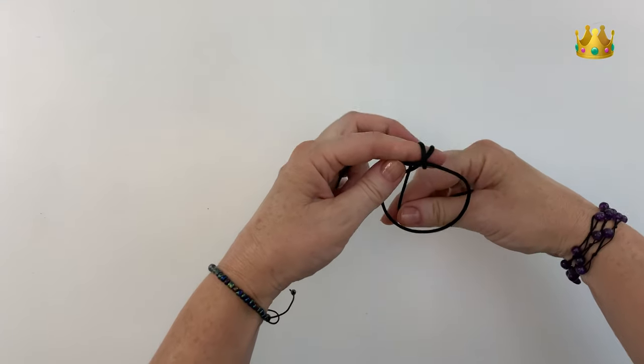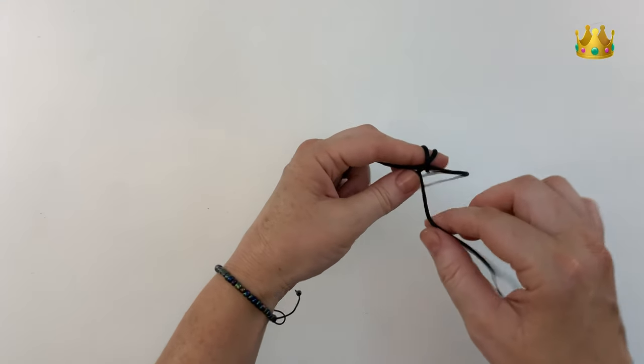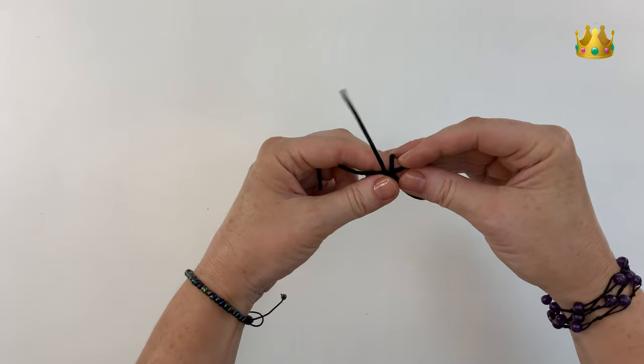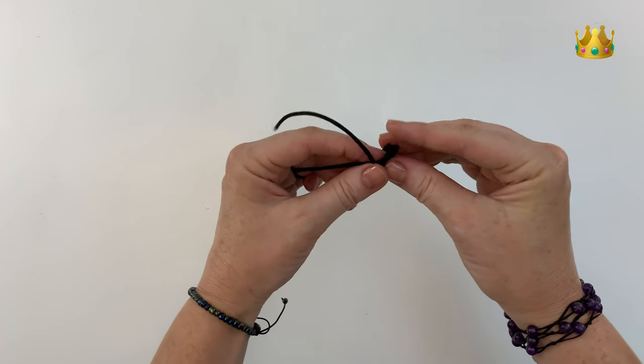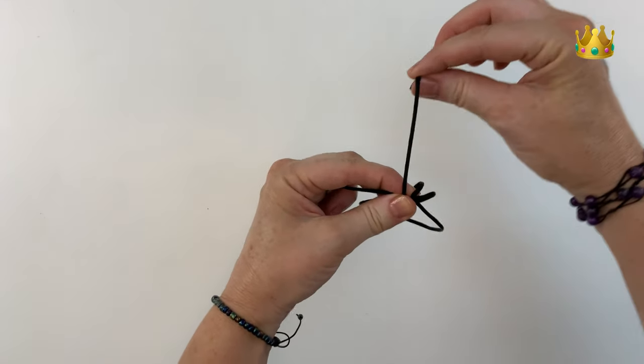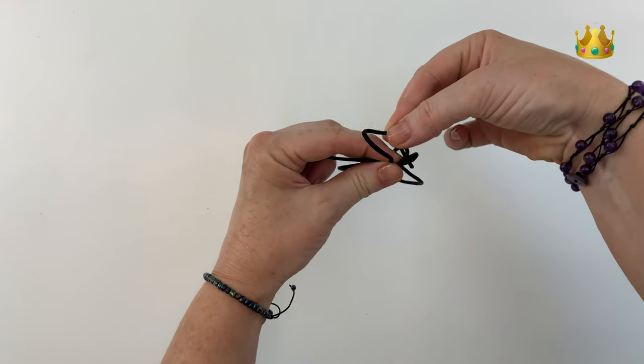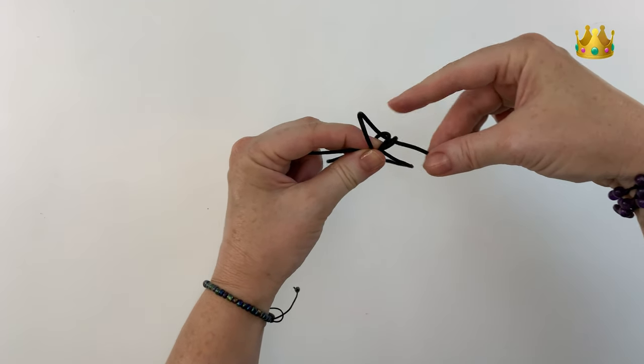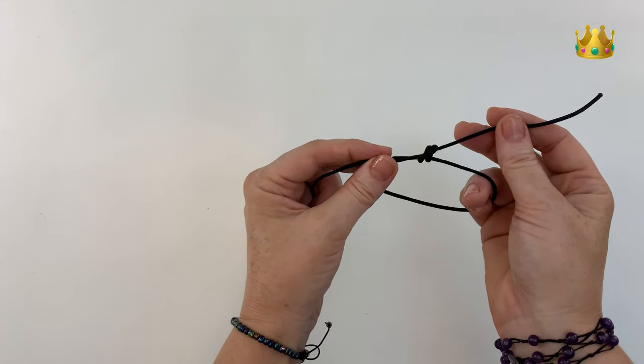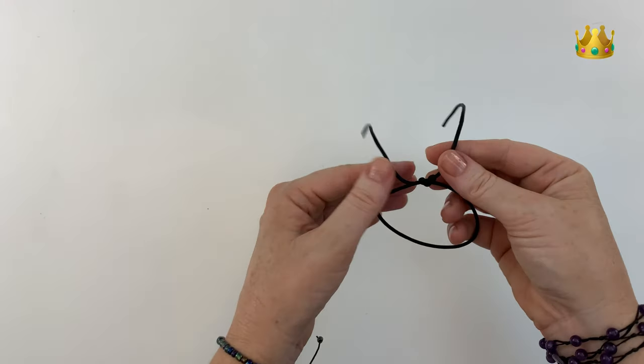And then again, down the back and around our finger for a second loop. Now we gently remove these two loops off our finger. And with this end here, we bring it around and place it down both loops, pulling it out the right hand side and pulling that knot down nice and tight.